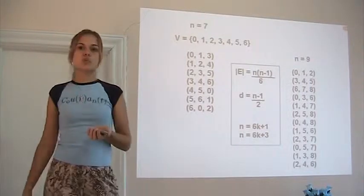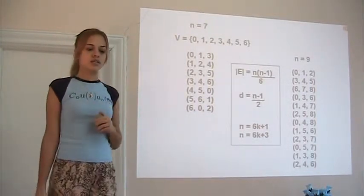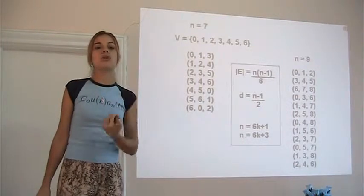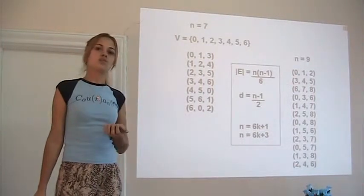Now in the case of 6k+1, the perfect packings are going to have to be defined as the packings that use all but one vertex, because it's just not divisible by 3.